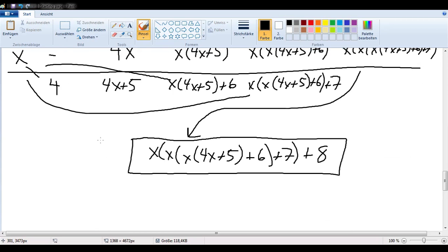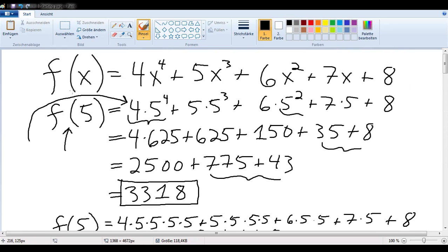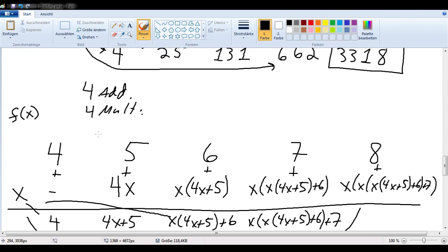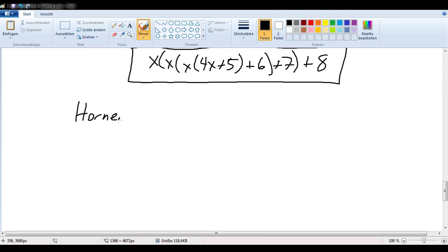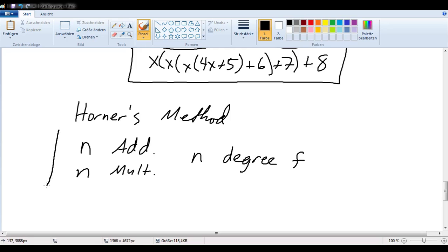So, now you are allowed to believe me that there is a better method of computing a function value. And using this method, known as Horner's method, you can compute that function value using only n additions and n multiplications, where n is the degree of your polynomial f. And it can be proved that this is optimal. So this is the minimum number of operations that you have to do in order to compute the function value of a polynomial.